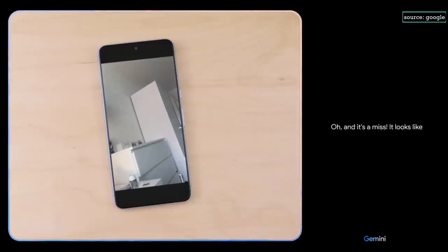What do you think might happen next? The cat is going to jump to the wall and stick the landing. It's going to be a perfect 10. Oh, and it's a miss. It looks like it was just a little too far away. But don't worry. The cat is a natural athlete and it will be back up there in no time.